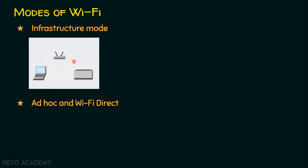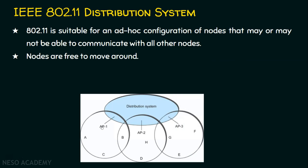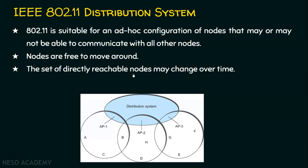Let's see the IEEE 802.11 distribution system. We know 802.11 Wi-Fi is suitable for an ad hoc configuration of nodes that may or may not be able to communicate with all other nodes. It need not be the case that every node communicates with other nodes, because the nodes are free to move around - they are mobile nodes. For example, if node A is presently connected with access point AP1, the user may take this mobile node and move to a different location where A can no longer reach AP1, but A can connect to access point 3.